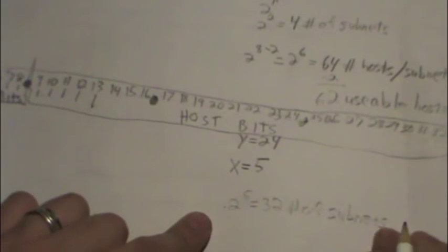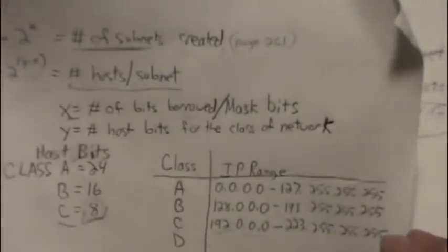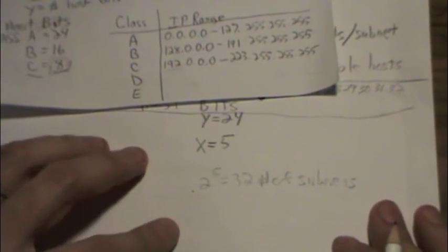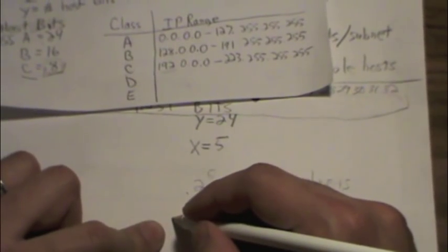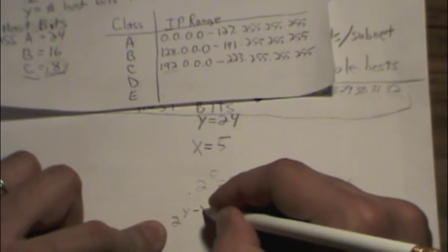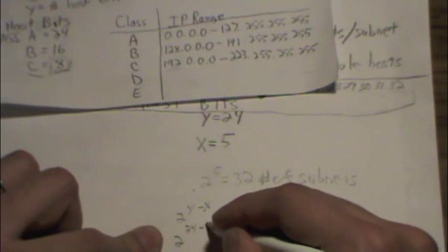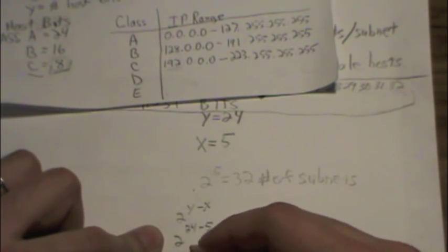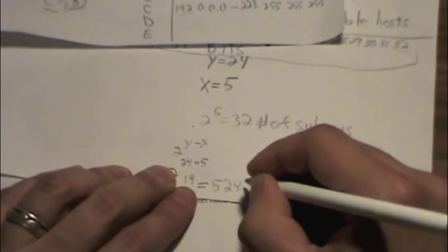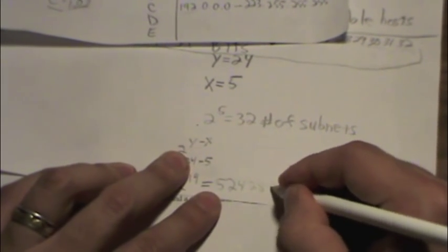Now, how do we get the number of hosts per subnet? It looks like we're going to get a lot of them because we're dealing with a Class A here. So let's go ahead and solve for it. If we do 2 to the y minus x, we do that with 2 to the 24th minus 5, which equals 2 to the 19th.